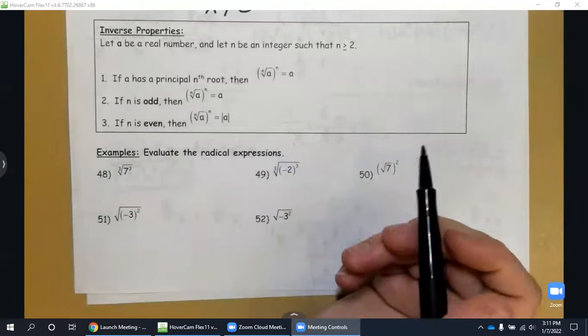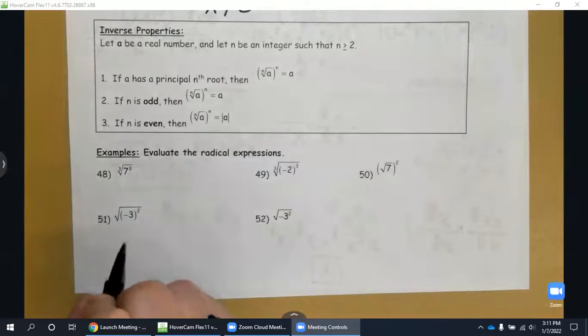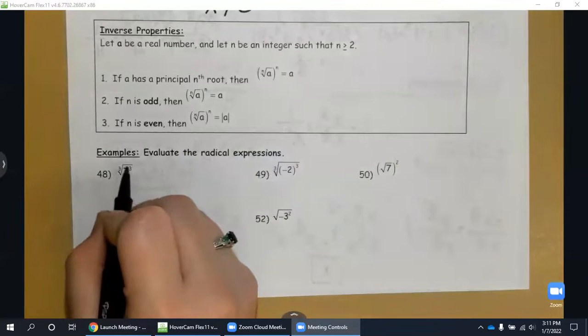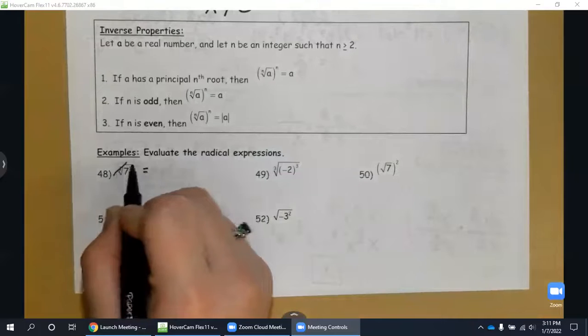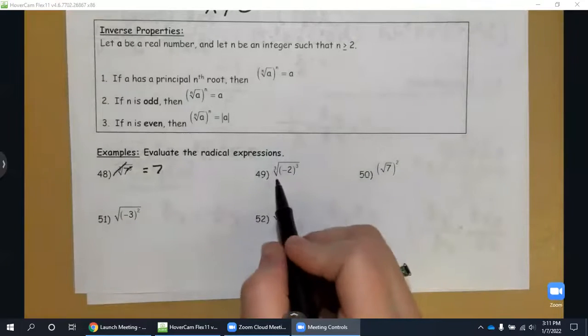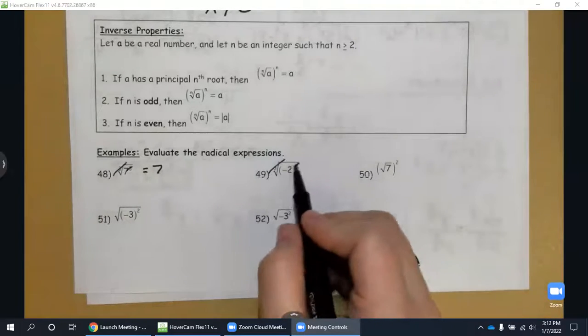So here, 48, cubed root of seven to the third power, that's going to cancel out and give us seven. Now here, cubed root of negative two cancels out, gives us negative two.